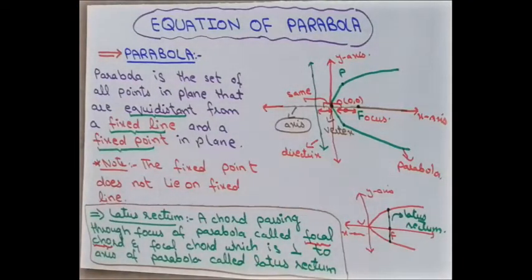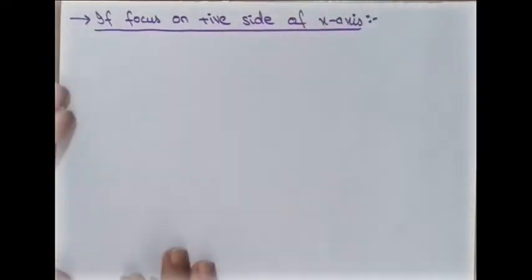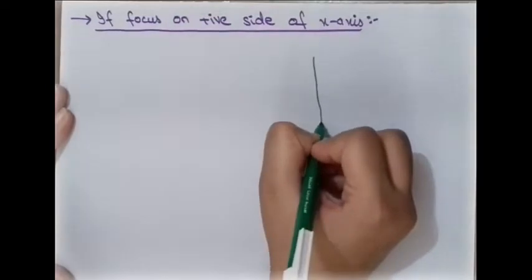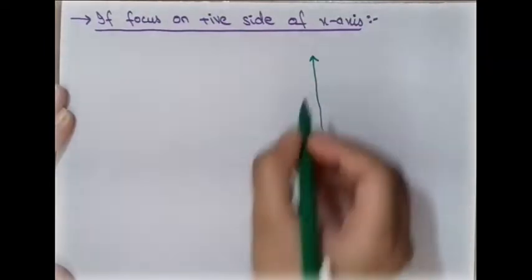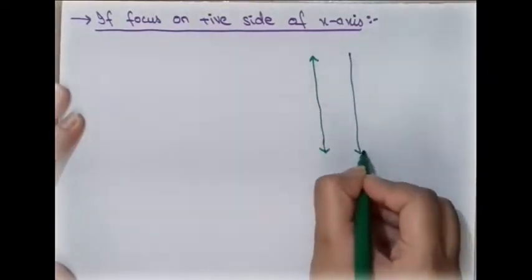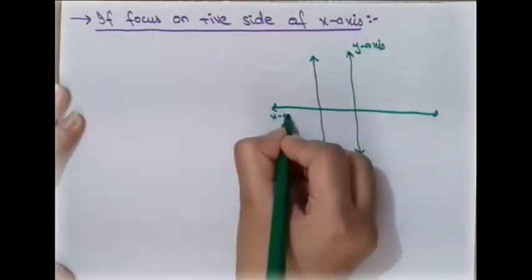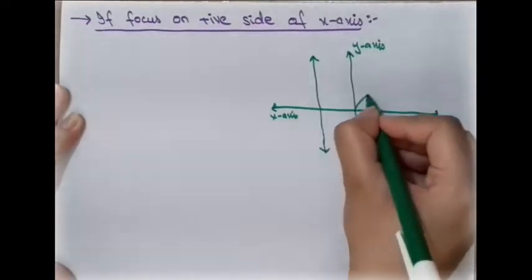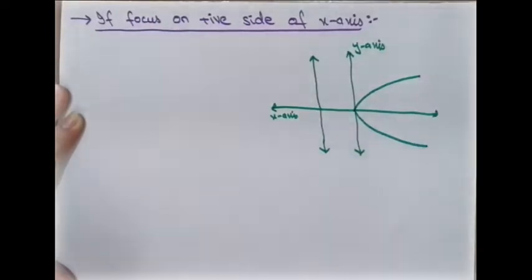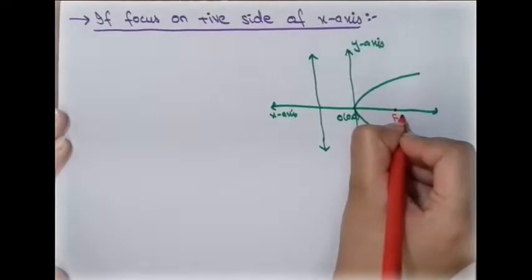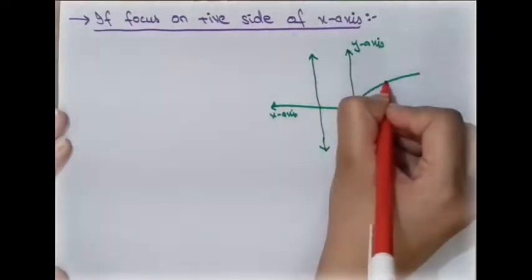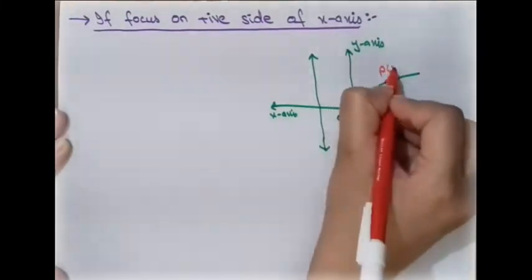Now we move to the main objective: finding the standard equations of all four parabolas. We begin by deriving the equation when the focus is on the positive side of the X-axis. These formulas are valid only when the vertex is at the origin (0, 0). Suppose there is a point P with coordinates (x, y).